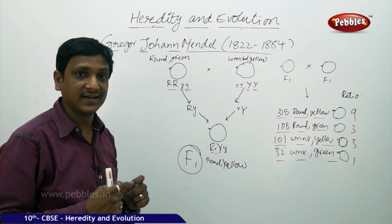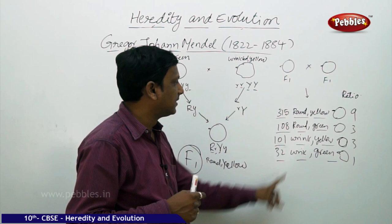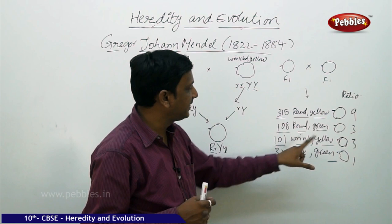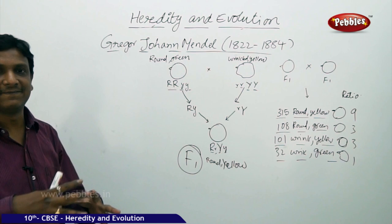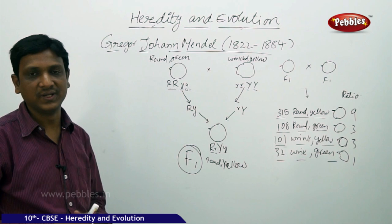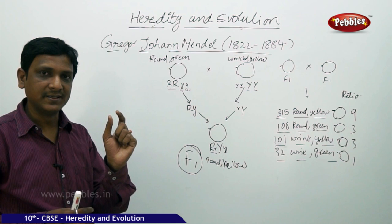The different combinations he obtained show that although he started with round green and wrinkled yellow, he got round yellow, round green, wrinkled yellow, and wrinkled green. These different combinations arise because the traits are inherited individually. One more important point is that each and every trait is represented by two genes.